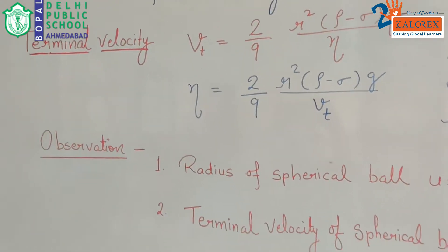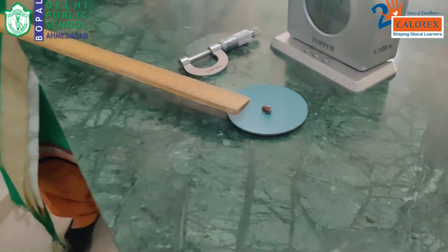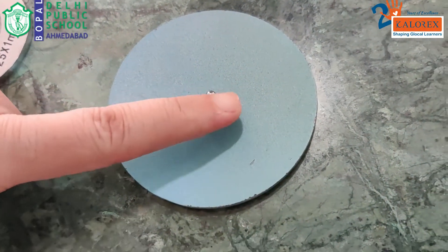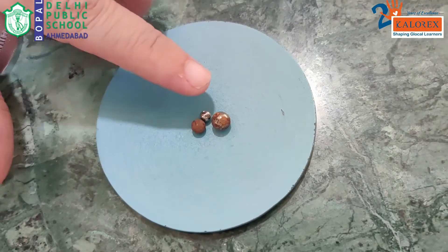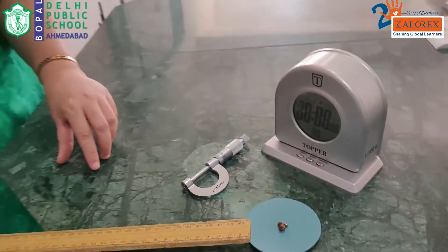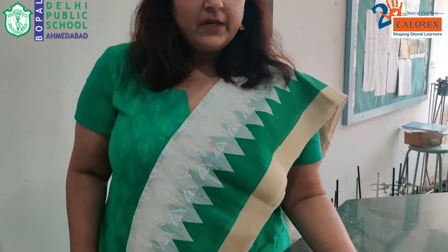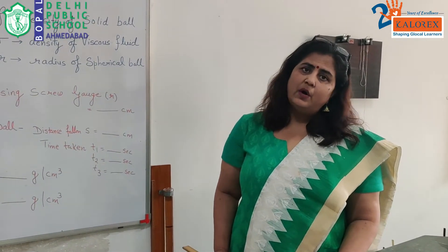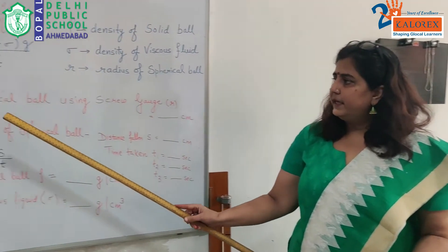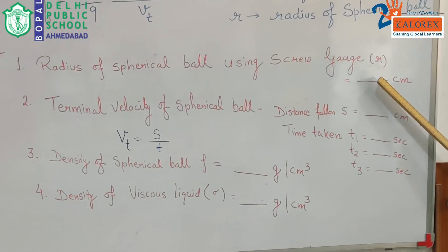In order to start the experiment, as you can see we have taken three bobs — three spheres of different radii. One is very large, the other is slightly smaller, and there is one which is of a very small radius. The radius of these bobs will be measured with the help of a screw gauge. We have already learnt how to measure the diameter of a spherical body using a screw gauge, so first we will take the diameter readings of all three spheres and from there note down the radius.